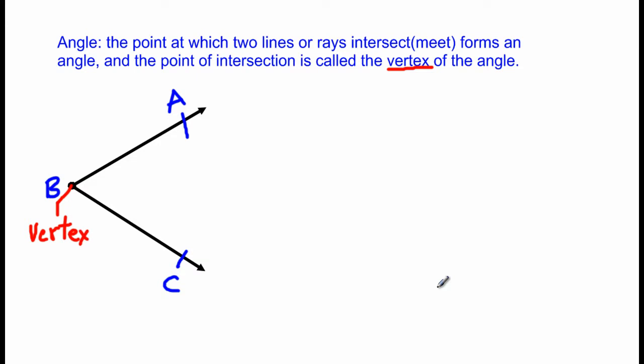Now each ray forms a side of the angle. So ray AB forms a side of the angle. The ray BC also forms another side, because this angle would have two sides.